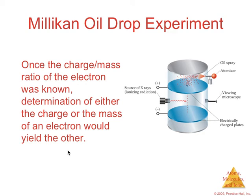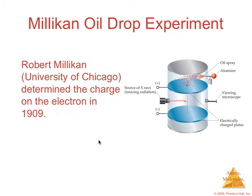Millikan then took J.J. Thompson's results and ran what's known as the oil drop experiment. And basically, since J.J. Thompson found the charge-to-mass ratio of the electron, if you could find either the charge or the mass, you would know the other one. So Millikan set up this experiment. He determined the charge of the electron in 1909, and hence was able to find the mass of the electron from J.J. Thompson's results.